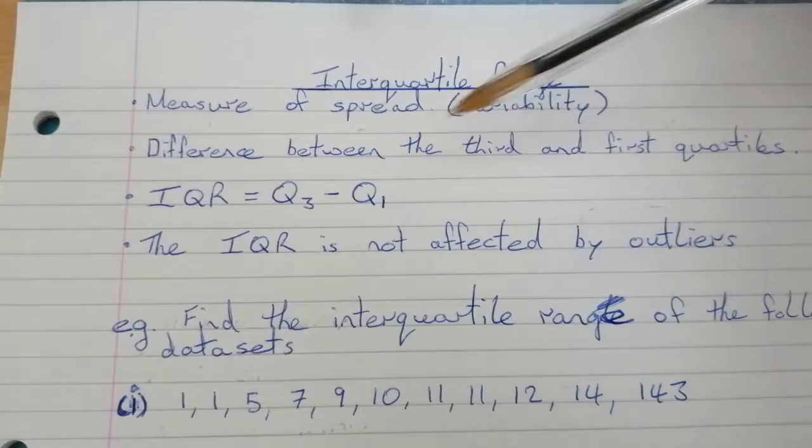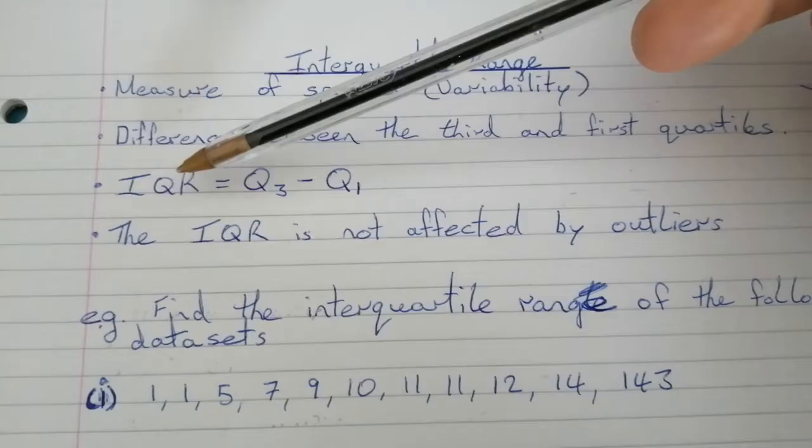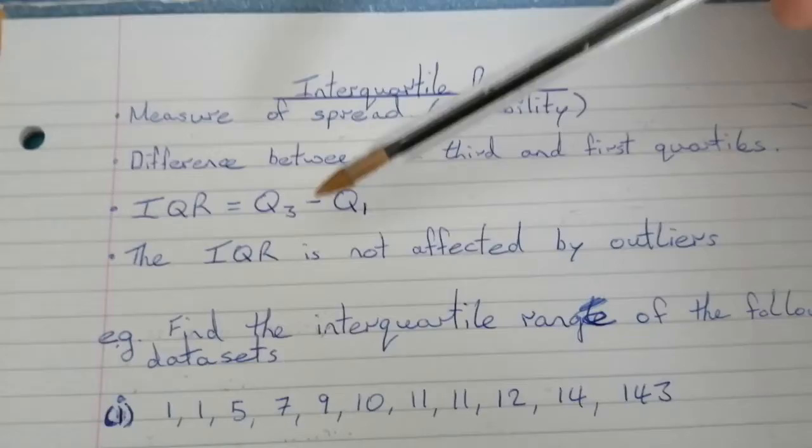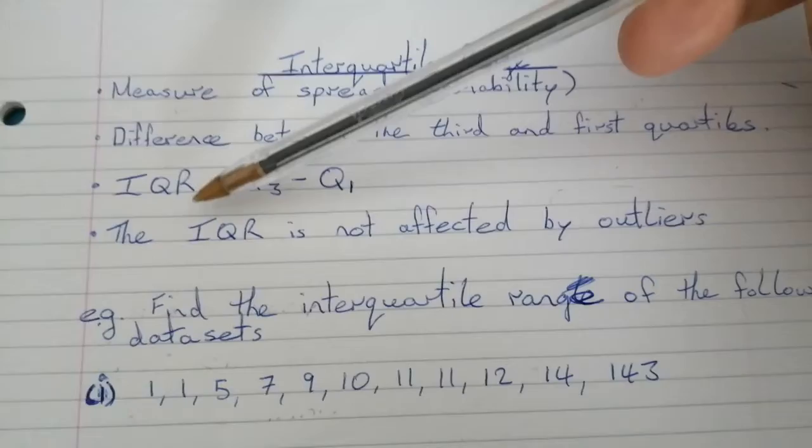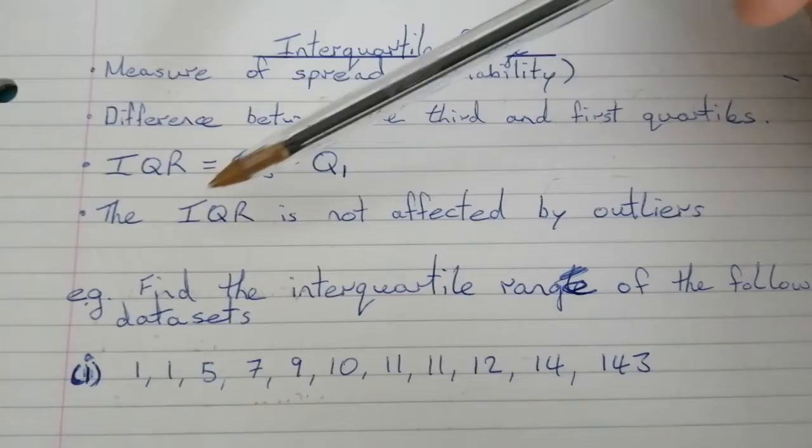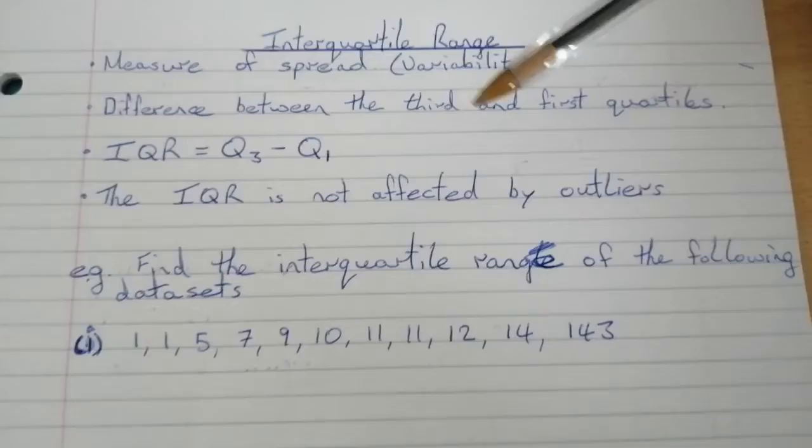It's the difference between the third and first quartiles. The shorthand is IQR — the interquartile range — is equal to Q3, which is the third quartile, minus Q1, which is the first quartile. One of the benefits of using the interquartile range instead of the range is that the interquartile range is not affected by outliers.